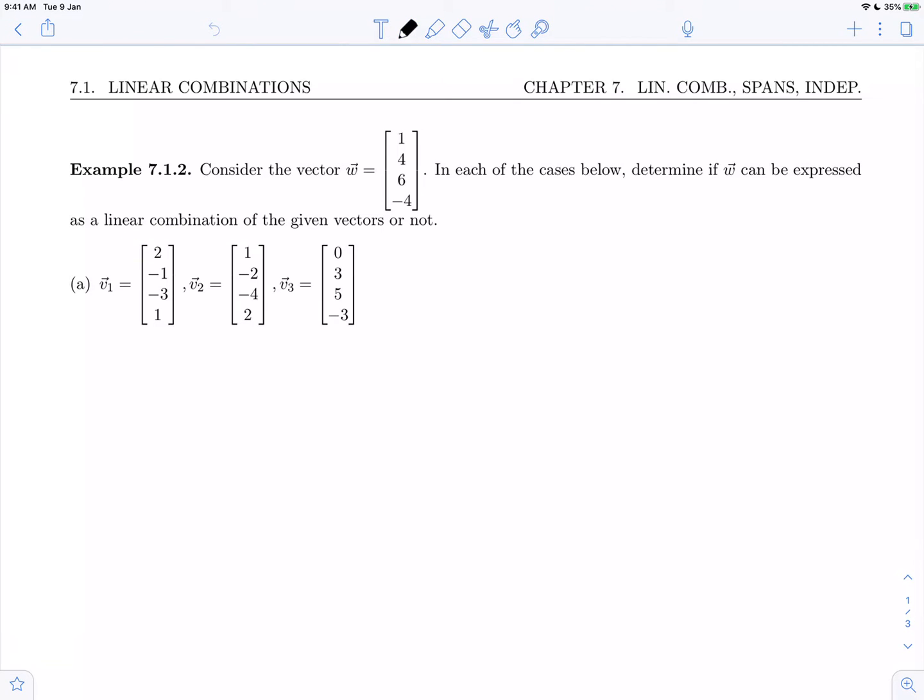We need to remember that being asked to express a vector as a linear combination is being asked to find constants. Are there values a1, a2, a3 as real numbers such that we can express w as a linear combination: a1 times v1 plus a2 times v2 plus a3 times v3?